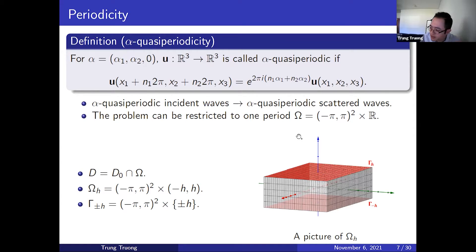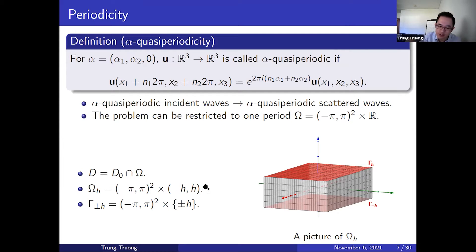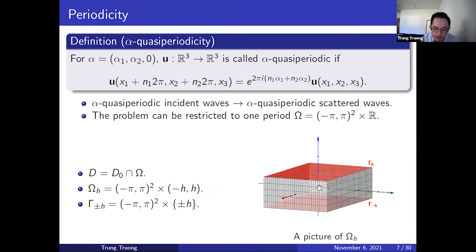We also assume that the structure is bounded in x3. Therefore, we can restrict our problem further onto this bounded domain omega_h, in which we only go from negative h to h in the x3 direction. Here h is a sufficiently large positive number so that our structure is inside this bounded domain omega_h. Gamma_plus and gamma_minus_h are the upper and lower faces of omega_h, and these are where we have our data measured.